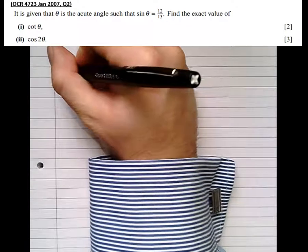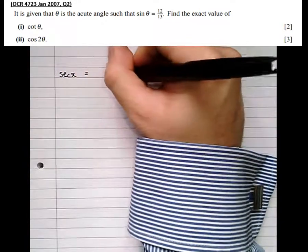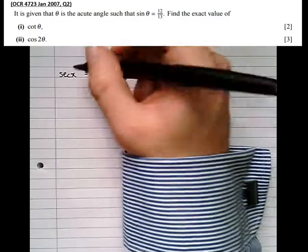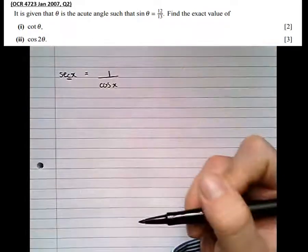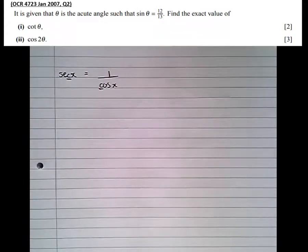Well, the first one, we've got sec x, which is equal to 1 over cos x. And the way we remember these, the third letter of these reciprocal trig functions always matches the first letter of the function to which they relate.